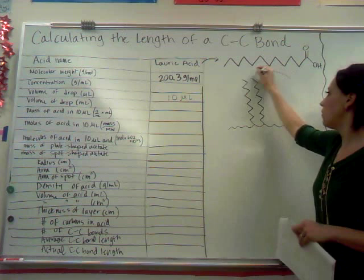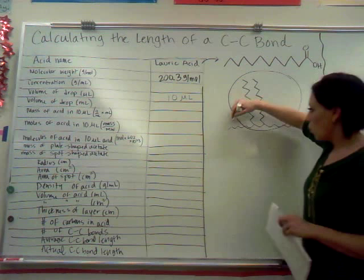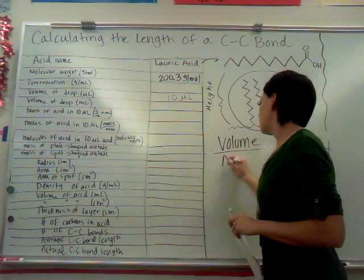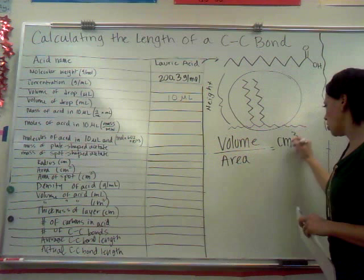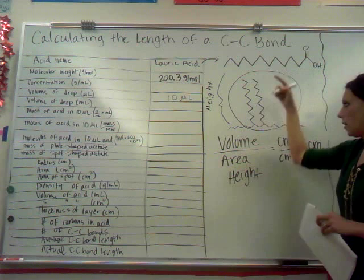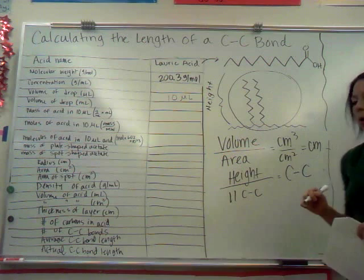If we know the entire volume of the drop of the lauric acid, and if we know the area of space that it takes up, which I'll show you how we can do that in a second here, we're going to be able to calculate the height of this entire layer. Because if we know the volume of the drop and we know the area of the space that the acid takes up, we're going to have centimeters cubed divided by centimeters squared, which is the height in centimeters. Now if we know the height of the entire monolayer, and we know there are, for example, 11 carbon-carbon bonds, we will in fact be able to calculate the length of a single carbon-carbon bond, which is less than a nanometer.